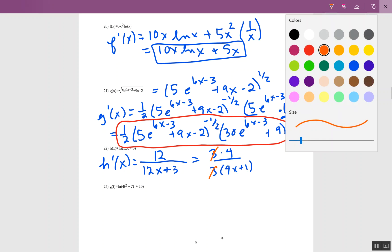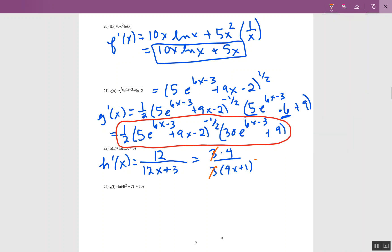I could choose to do that and then cancel the 3s. And then that would just leave me with 4 over 4x plus 1. You don't have to do that. You could leave it as the 12 over 12x plus 3. Or if you want to do 4 over 4x plus 1, that's fine with me too. I'm happy with either one of those.